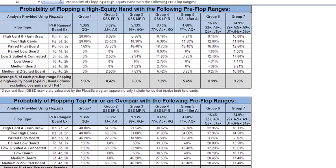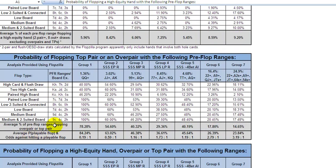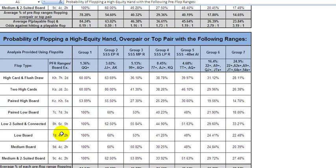We've looked at ranges and hand-to-hand matchups. The question here is how often are certain ranges — not just certain hands — going to hit flops? And this is one of the analyses I did from Flopzilla. You can download that program at Flopzilla.com. It shows you the probability of hitting certain flops with certain hands, as well as what your probability of hitting certain flops is with certain ranges. I ran analyses for different ranges here with different boards, and how often they're going to hit a high equity hand as defined here — how often they'll hit top and overpairs.